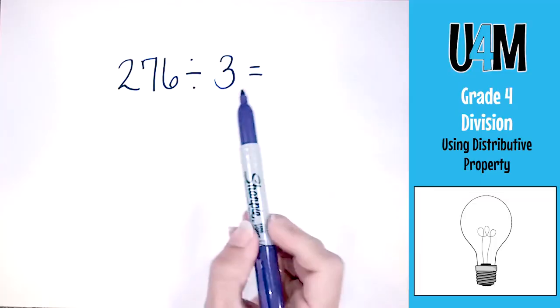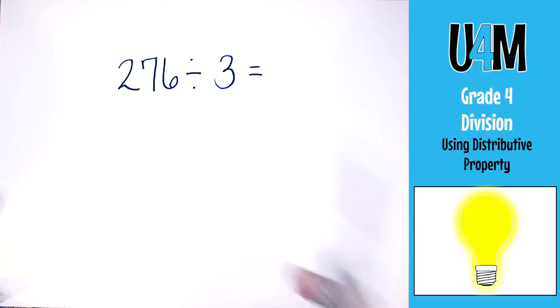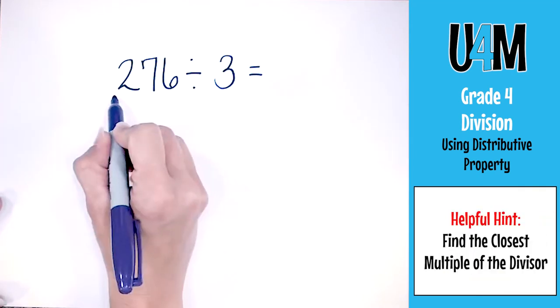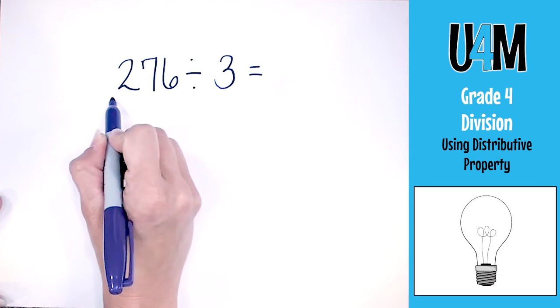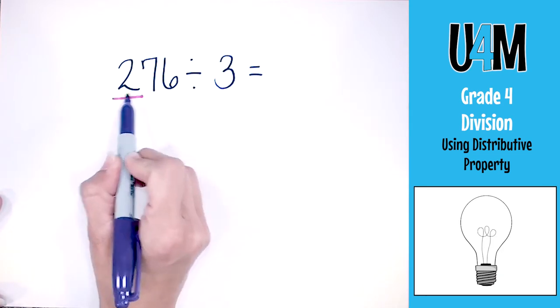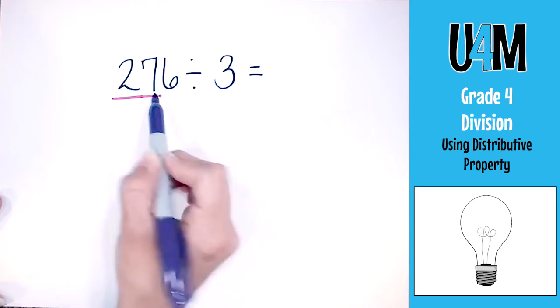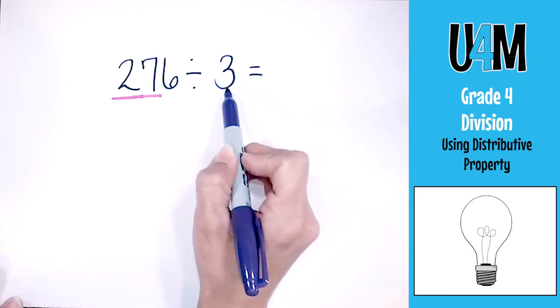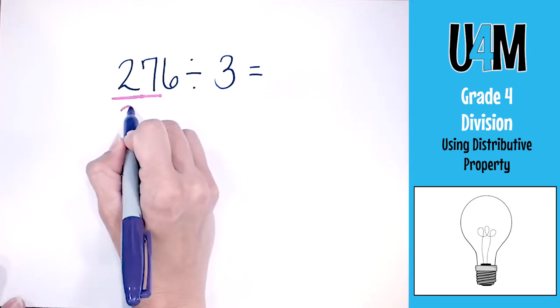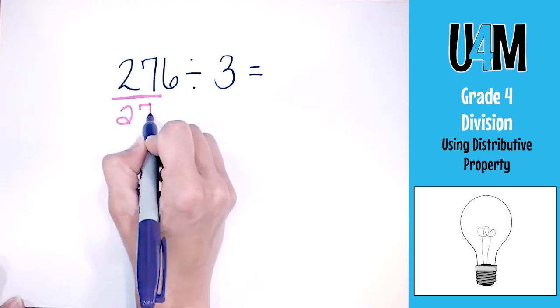Let's take a look at a problem and see how this really works. In this problem, we have 276 divided by 3. My first step is to look at the first number and see what multiple comes closest to it. If there's not a multiple of 3 that comes closest to 2, I'm going to look at 27. This is a lot like long division - we look at the first part of the number and try to divide into it.